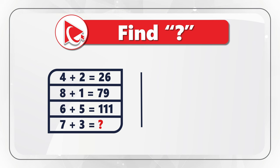Now we can calculate the fourth expression: 7 minus 3 gives the first digit 4, and 7 plus 3 gives 10. So the correct answer is choice B, 410. Did you figure it out, or did you find a different solution? Please make sure to share your solution and rationale in comments.